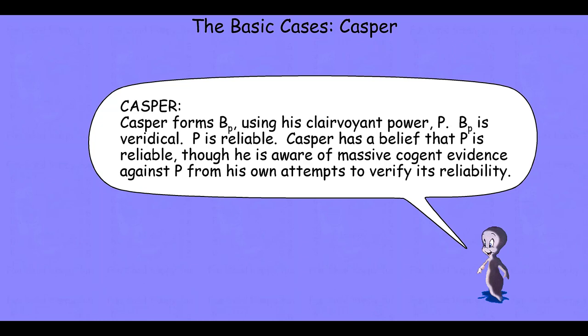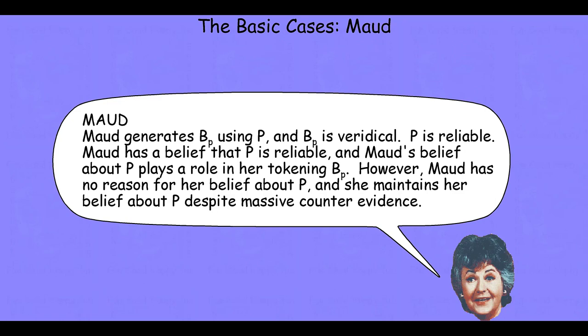Now, how that would come about is somewhat unclear — if the power is one hundred percent perfectly reliable, how did he accumulate this massive contrary evidence? But again, Bonjour's goal is to create the impression that the reliabilist conditions for justified belief have been satisfied, and yet our intuitions suggest that from Casper's own subjective perspective, he is being irresponsible and irrational, and thus can't possibly be justified despite the reliabilist predicting that he is.